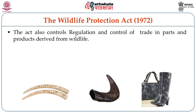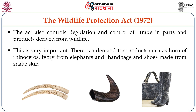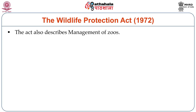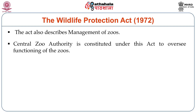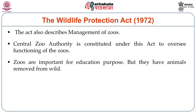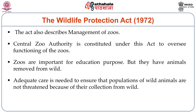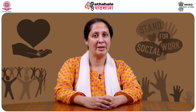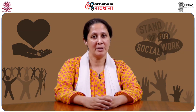This is an extremely important provision. There is great demand for products like horn of rhinoceros, ivory from elephants, and handbags and shoes made from snake skins — all of which are illegal items. The act also has provision for management of zoos. A Central Zoo Authority is constituted under this act to oversee the functioning of all zoos in India. Zoos are extremely important for educational purposes, and there are many rules about how zoo animals should be kept and managed.